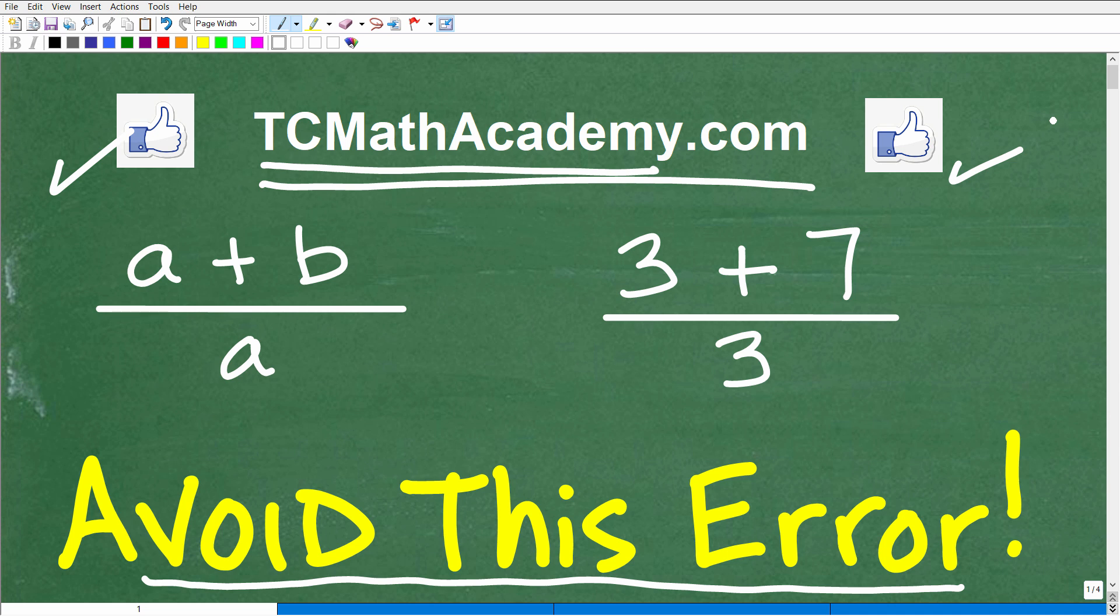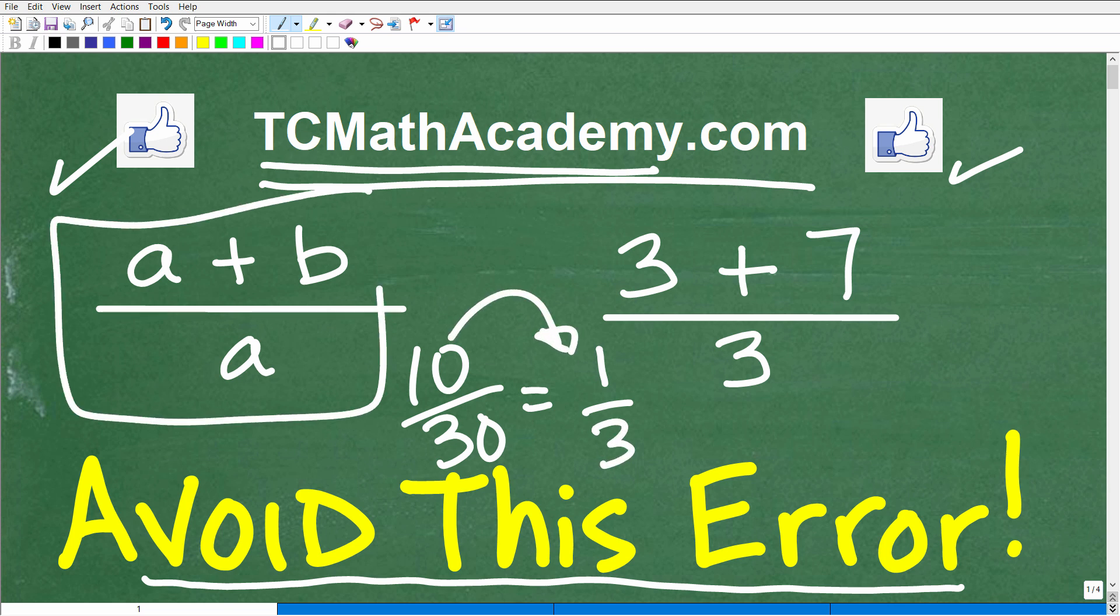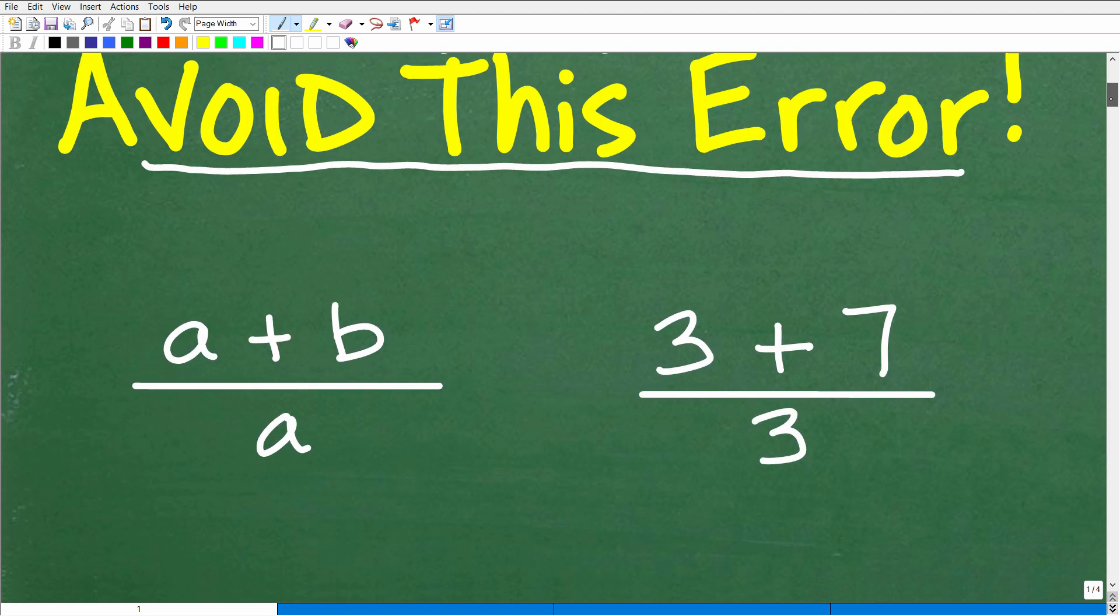Let's go ahead and simplify each of these individual expressions. If I have the fraction 10 over 30, you can reduce that fraction to 1/3. You want to write things in their simplest terms. If you can simplify these two expressions, let's take a look at the answer right now.